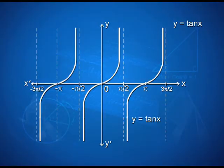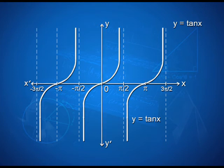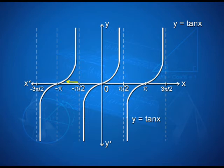Looking at the graph, x'Ox is the x-axis and yOy' is the y-axis. We can see that the graph is increasing from 0 to pi/2 but not touching the line pi/2. Similarly, between −pi/2 and pi/2, the graph is increasing and approaching pi/2 but not touching it. It also decreases along the asymptote at −3pi/2, again not touching that line.